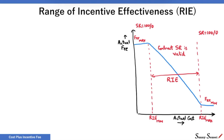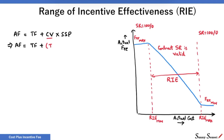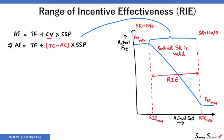Next, let's see how to find the lower limit of RIE. Actual fee is target fee plus the product of cost variance and seller share of risk in percent. We have already covered this in the previous lesson. Solving further, cost variance can be replaced with target cost minus actual cost. This equation is valid in the range of incentive effectiveness from RIE min to RIE max.